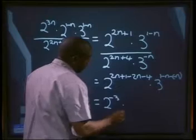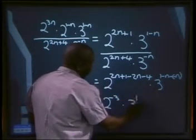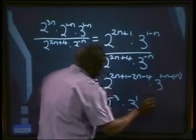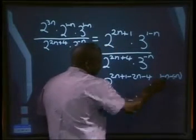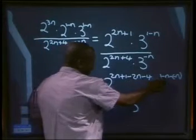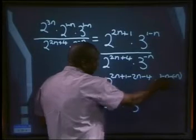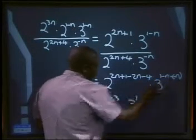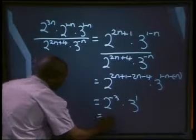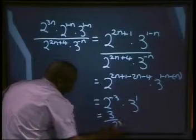Multiplied by 3 to the power of 1 minus n. Now this is very important — remember, if we have a negative and a negative together that gives us a positive. So negative n plus positive n gives us 0, and we are left with 3 to the power of 1. Our solution is 3 over 2 to the power of 3.